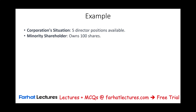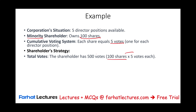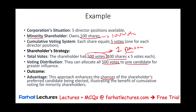Let's take an example: assume five director positions are available and a minority shareholder owns 100 out of 10,000 shares. In a cumulative voting system, each share equals five votes — one for each director — so this shareholder has 500 votes instead of just 100. They can concentrate all 500 votes on one candidate, greatly enhancing that candidate's chances of being elected. This is what cumulative voting does — it gives minority shareholders the power to elect representation.